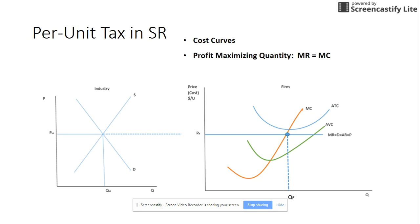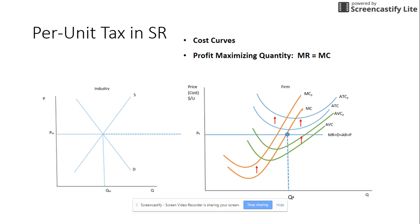The per unit tax in the short run has a few more cost curves to think about. The AFC is not affected, but the AVC would shift up because this is a variable cost — it's dependent upon output. The ATC, which is AVC plus AFC, will also shift up. The marginal cost equals the change in total cost divided by the change in quantity, or equivalently the change in variable cost, so the marginal cost curve is going to shift up as well. If the marginal cost curve shifts up, that affects our profit-maximizing quantity at MR equals MC, giving a new intersection of MC2 with MR — resulting in a Q2 that is less than QF.